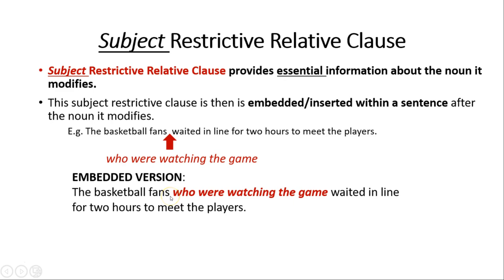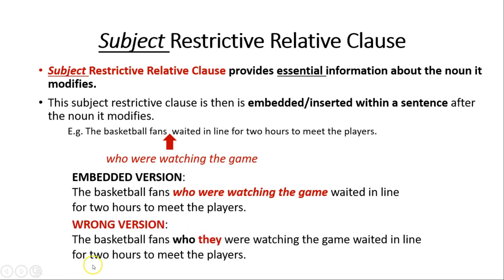Sometimes students make a mistake when transferring from their native language. They might say: 'The basketball fans who they were watching the game waited in line...' Some languages allow this type of cross-linguistic transition. However, in English, we cannot use two subjects next to each other. Since who already represents the subject in the relative clause, we don't need an extra subject like they — it would be very confusing.